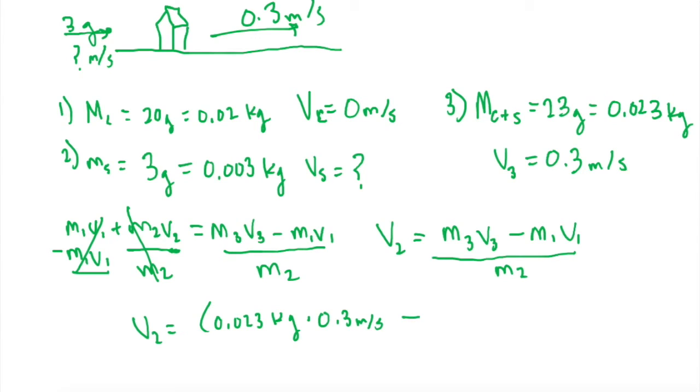Then we subtract M1 V1. M1 times 0 meters per second equals zero, so we can get rid of that term.